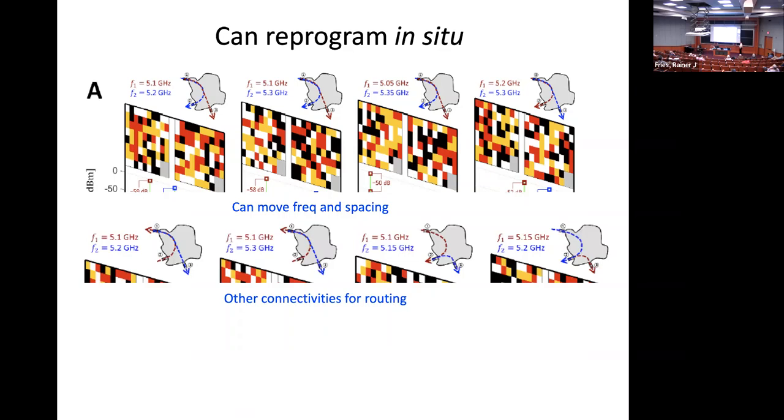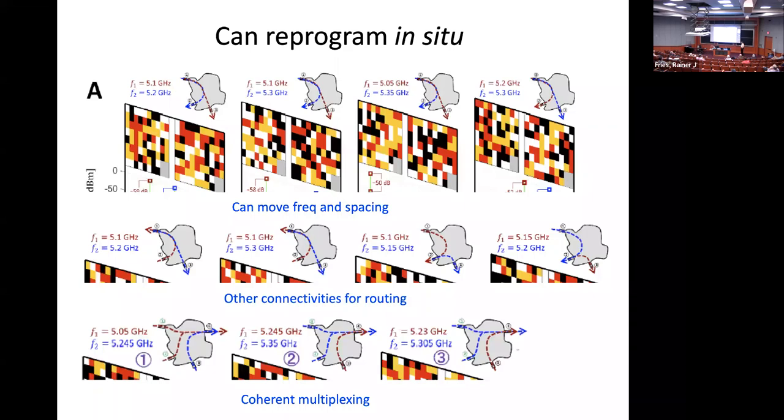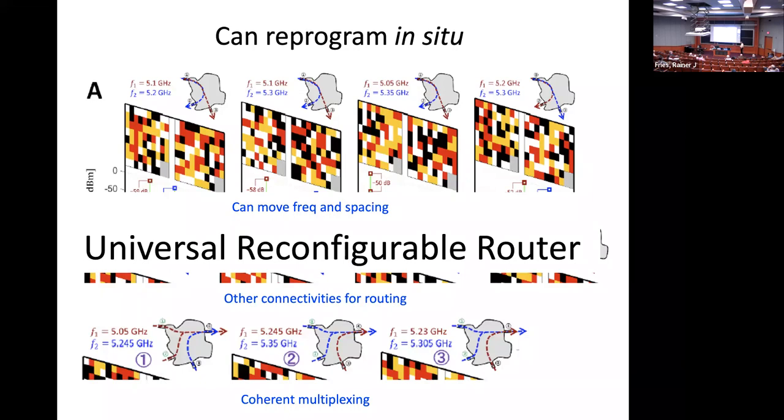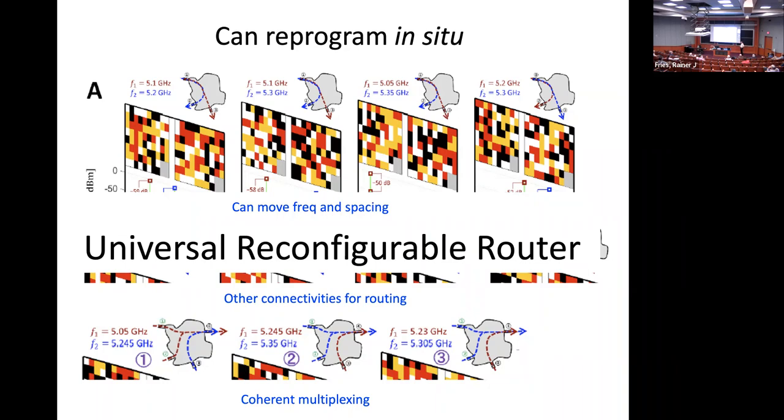The nice thing is we can reprogram this in situ. We can just go from one choice to another. This is maybe the original one, 5.1 and 5.2 gigahertz. Then we can go to different frequencies, 5.1 and 5.3, different settings of the metasurface. Then even bigger frequency spacing, and then higher frequency, all interchangeable. So you can just reprogram this and get this to work. You can move the frequency spacing and you can change the connectivity. You can have this one going from here to here and that one going from there to there. Finally, you can actually send two of the same frequency, coherently combine them, and have them go out that channel. So that's actually multiplexing. It's disparate signals, puts them on the same channel. So it looks like this kind of setup, even though it's not a practical setup, the technology is a universal reconfigurable router. Just using linear optics and some of these principles, you need good control.